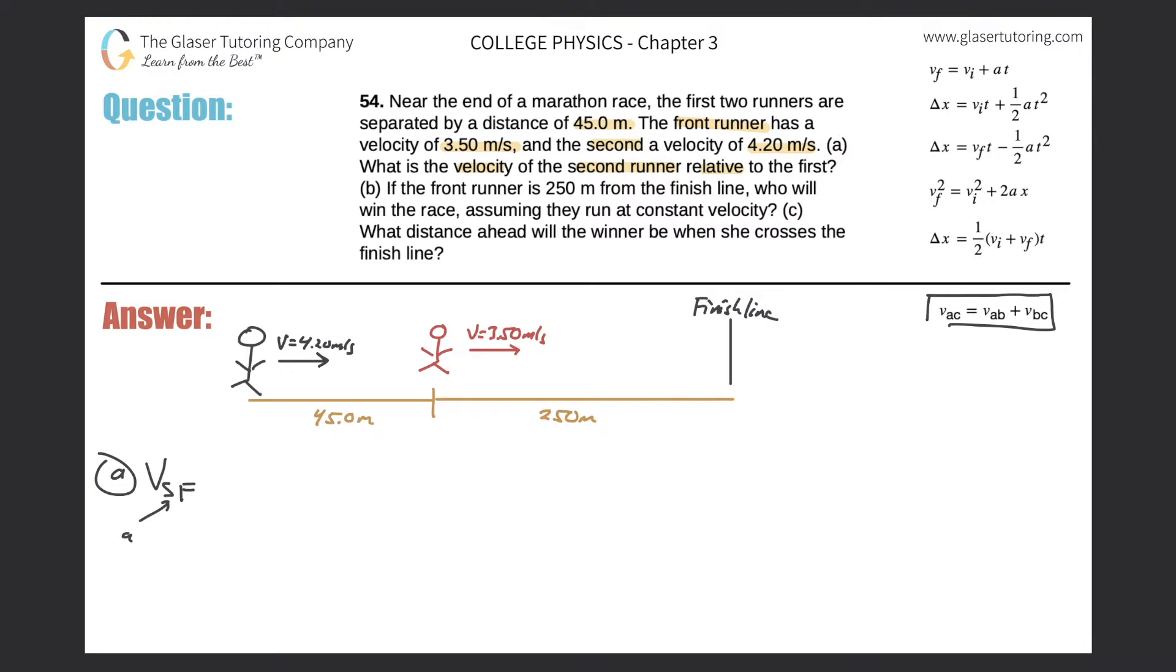What we're trying to find is the velocity of the second runner relative to the first. So according to my formula, this S is the A and this F is my C. That should equal the velocity of the second runner relative to B. Well, what is B? All of these given velocities that they gave us, the 4.2 and the 3.5, those are velocities of those runners relative to the earth. So the B there is actually earth in the problem. That's the third variable.